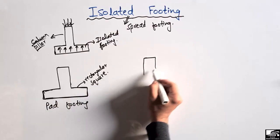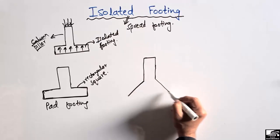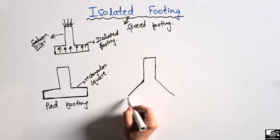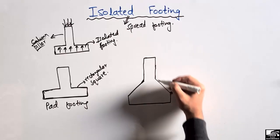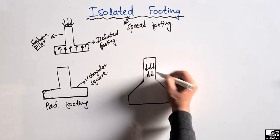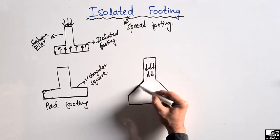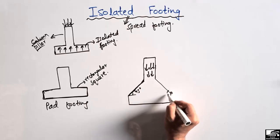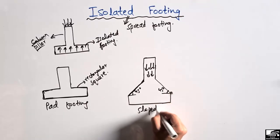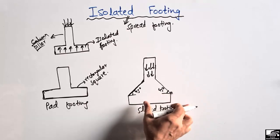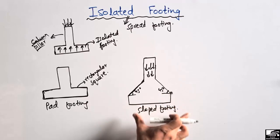The second type of footing is the slope footing, where the column load is taken by a footing with slopes. If I draw it exactly, this portion of the footing is being sloped at an angle of 45 degrees on each side. Such type of isolated footing is called the slope footing because we provide some slope in the footing in order to take the load. The material used in this type is always less than the pad footing, so it is a more economical type of footing.